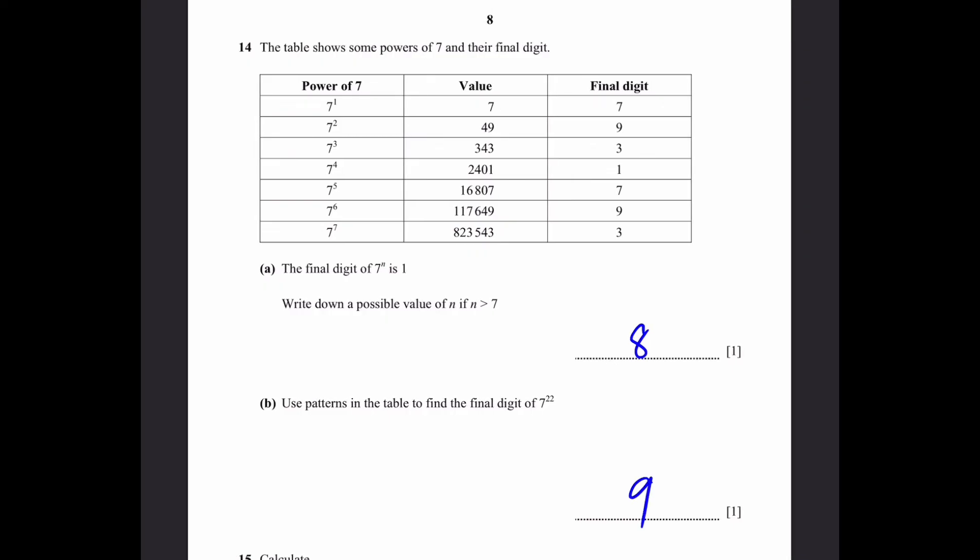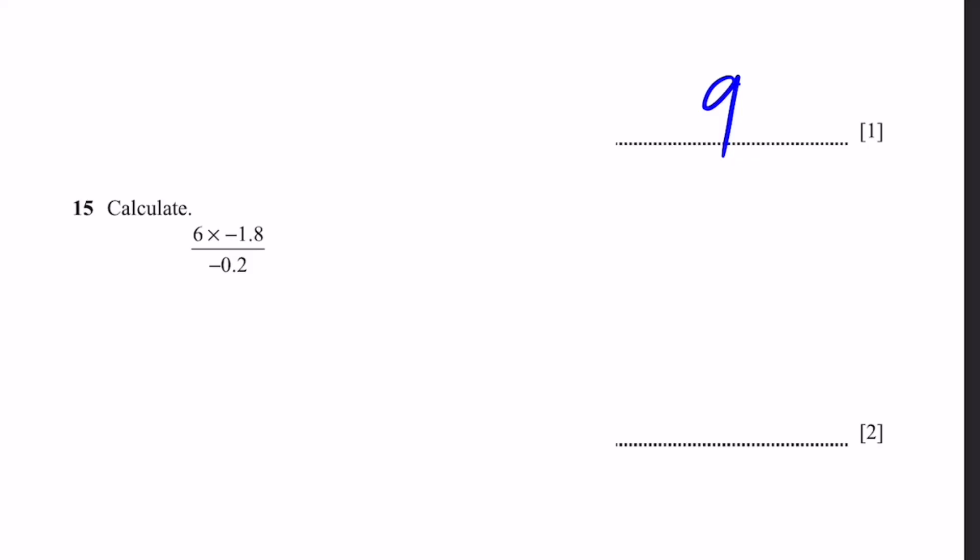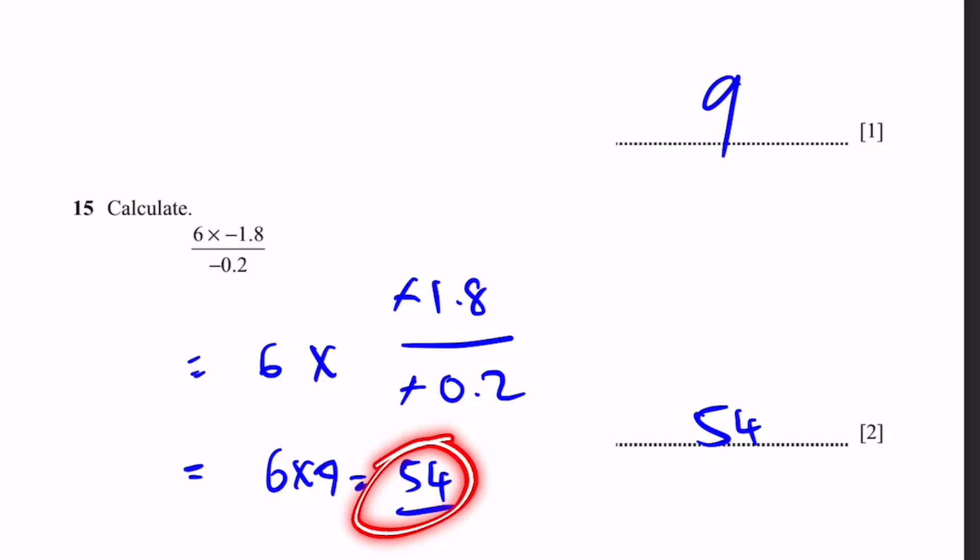B, use patterns in the table to find the final digit of 7 to the power 22. We can see that 7 to the power 2 ends in 9, 7 to the power 6 ends in 9 and so on for all numbers which are 2 above a multiple of 4. And 22 is also 2 above a multiple of 4. 20 equals 4 times 5, so 22 equals 4 times 5 plus 2, 2 above a multiple of 4. Therefore it shows that the final digit is going to be 9. Question 15, calculate 6 times minus 1.8 by minus 0.2. We can rewrite this and we will get, cancelling this, and then 1.8 by 0.2 is 9, so 6 times 9 which is 54. How did I get this equals 9? We can just multiply both sides by 10, 18 divide by 2 that's 9. Therefore we get 54 here. Thank you.